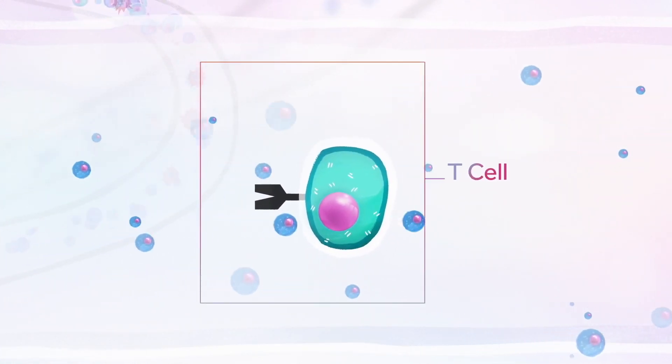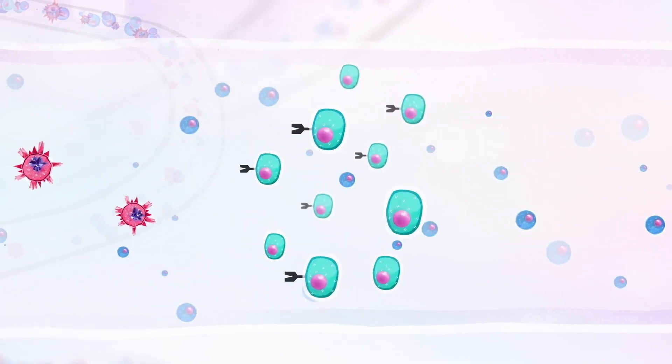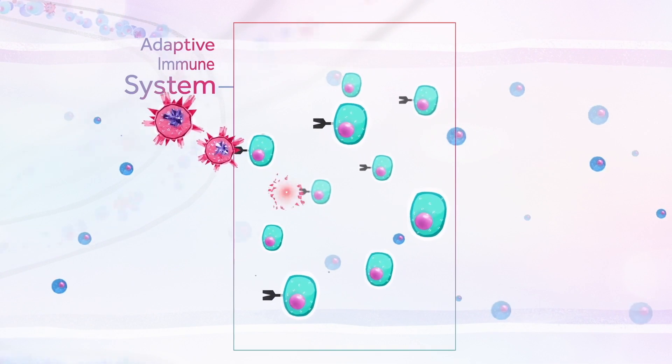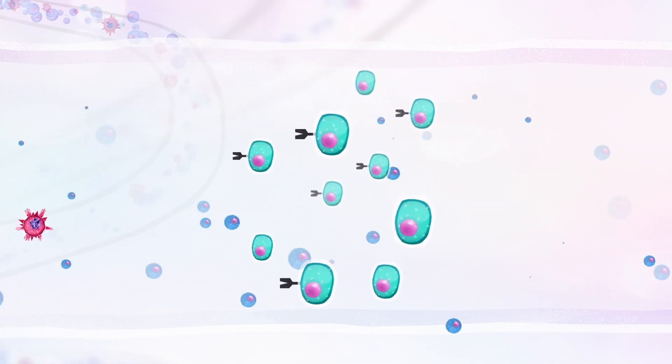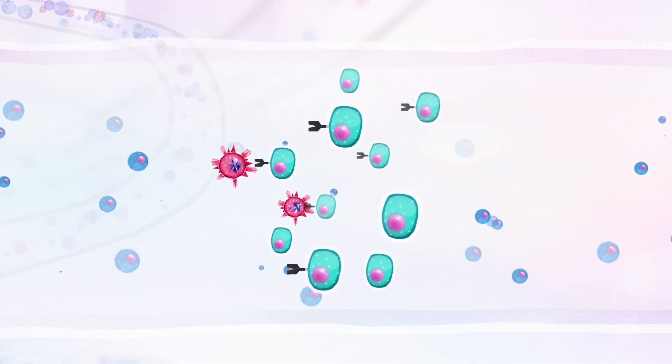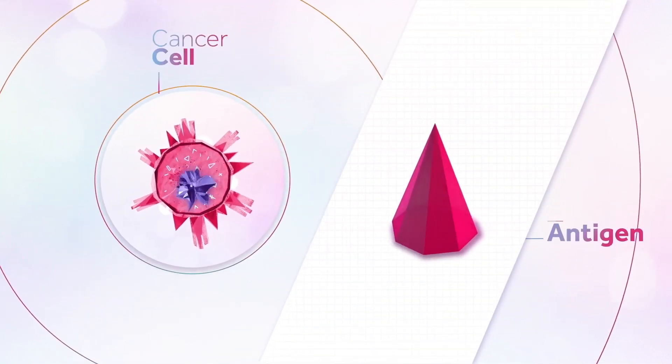T lymphocytes, or T cells, another type of white blood cells, belong to the adaptive immune system. They identify and eliminate cancer cells that express at their surface a molecule specific for a certain type of cancer called tumor antigen.